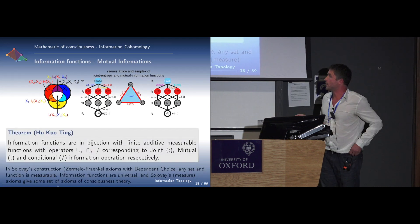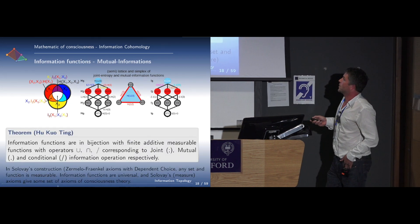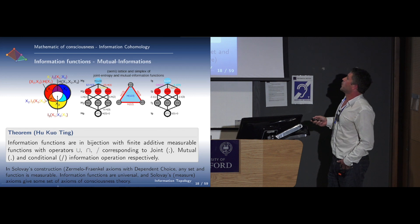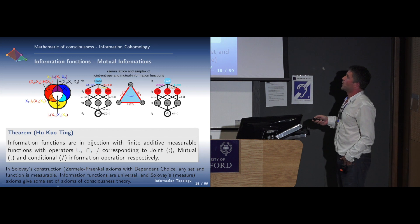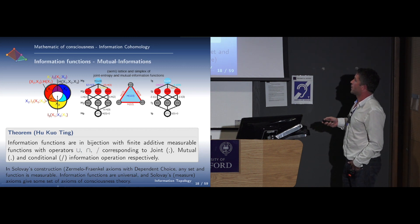We have a very deep theorem by Hu Kuo Ting, which states that information functions are in bijection with finite identifiable measurable functions with operators union, intersection, complement, corresponding to join, mutual information, and conditional information operations respectively. This makes the information functions a ring of functions.